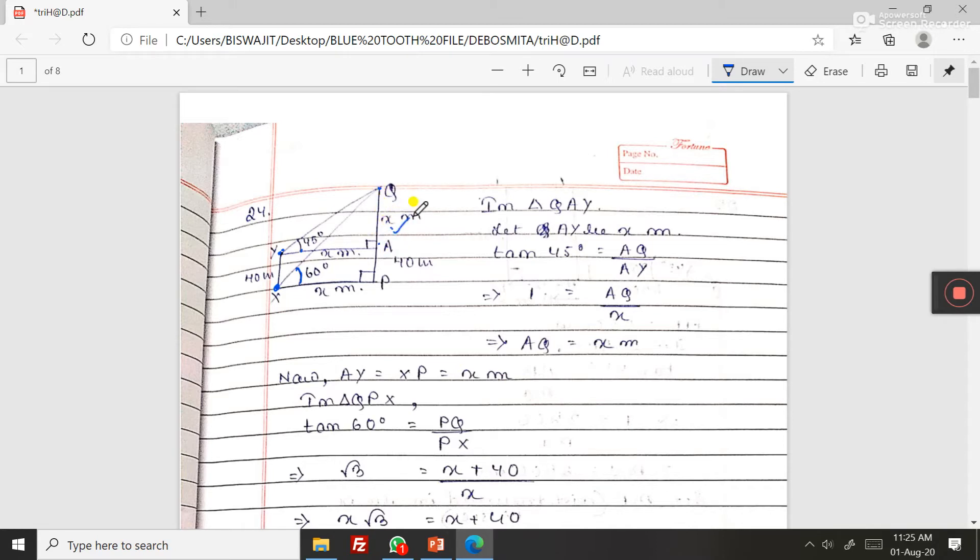Now see this one, QA. If you consider X, then 45 degrees, tan 45, perpendicular by base, that is QA by YA. So YA value, you have considered this one is x, this one of late x.